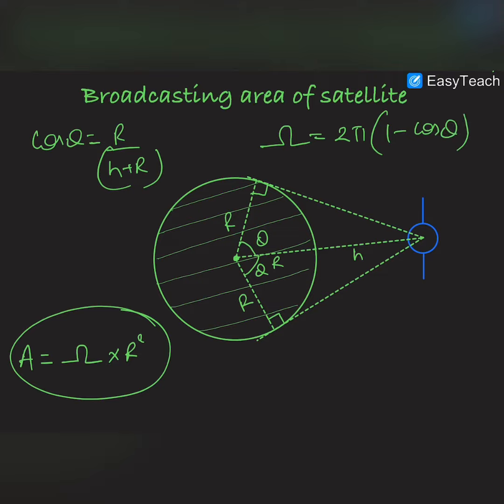So you can substitute the value. The area of broadcasting is equal to 2π times r squared times 1 minus r upon h plus r.